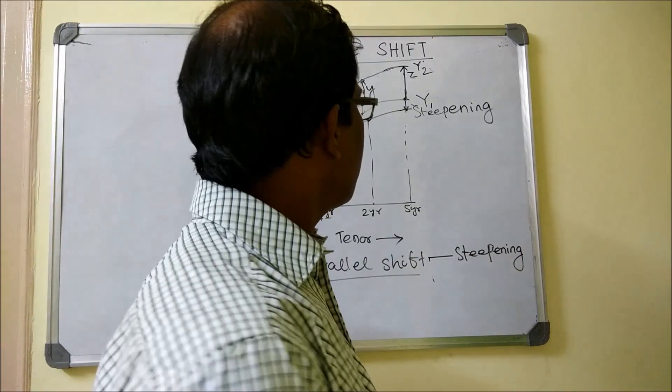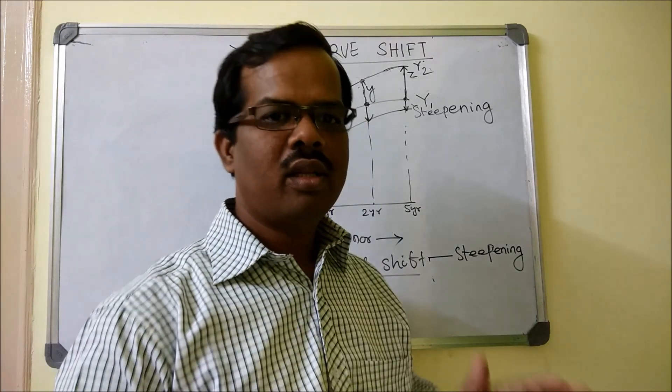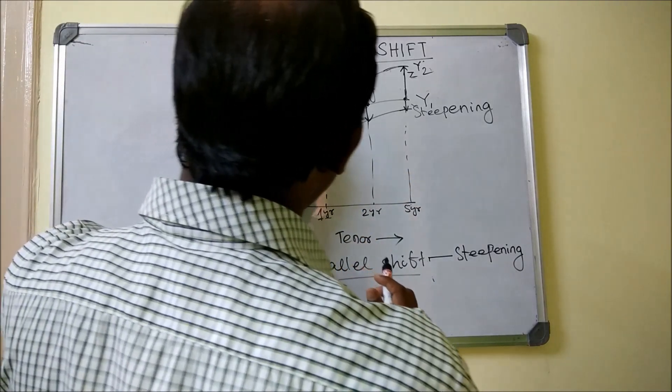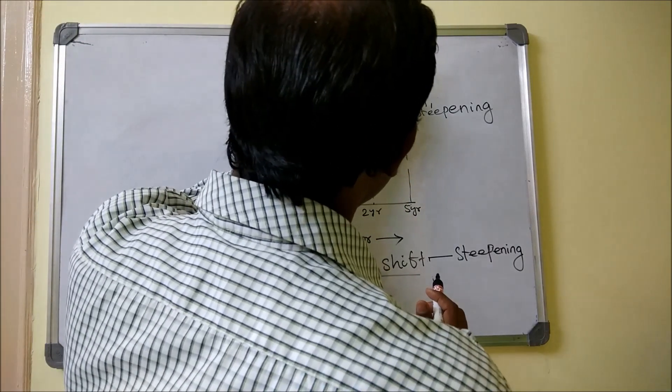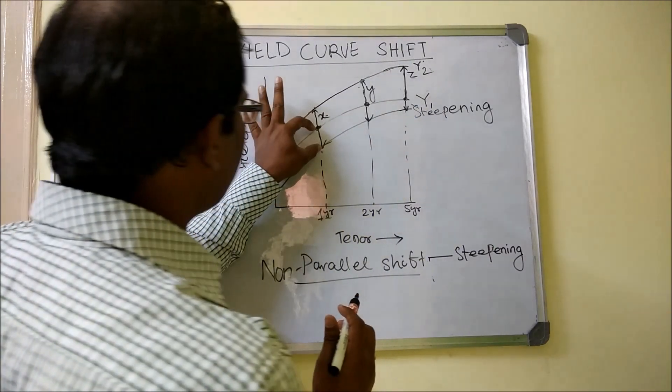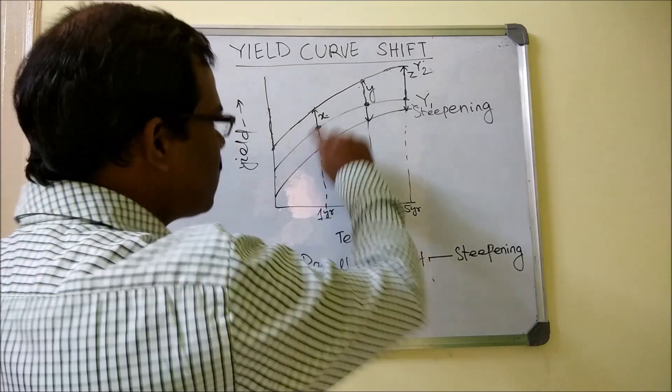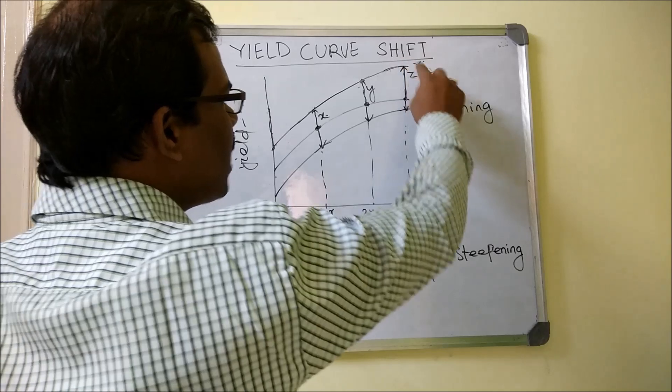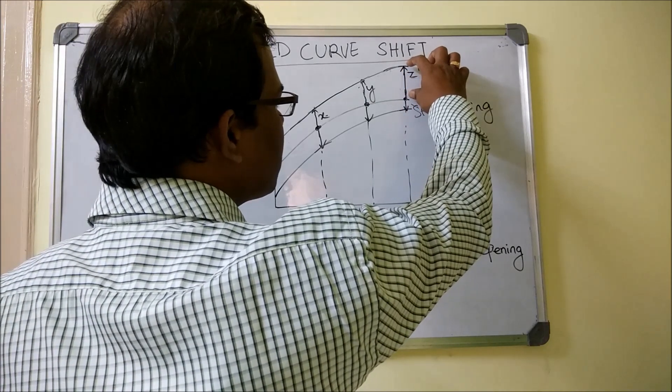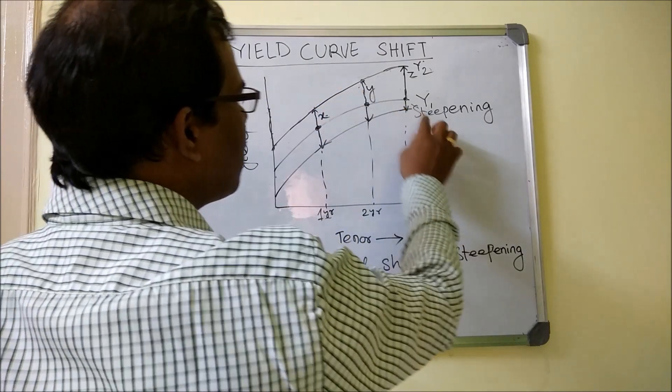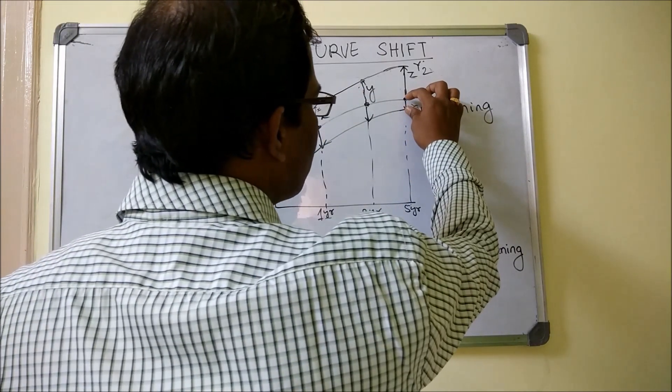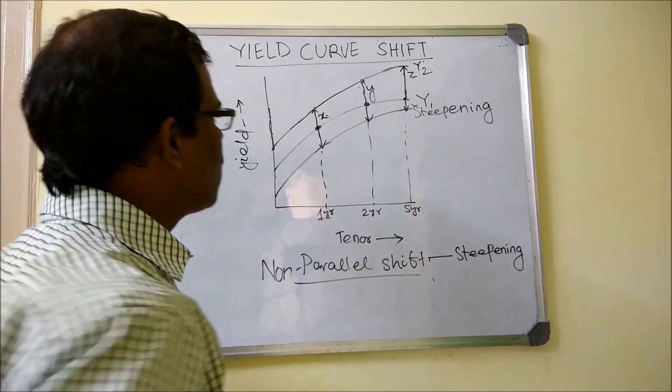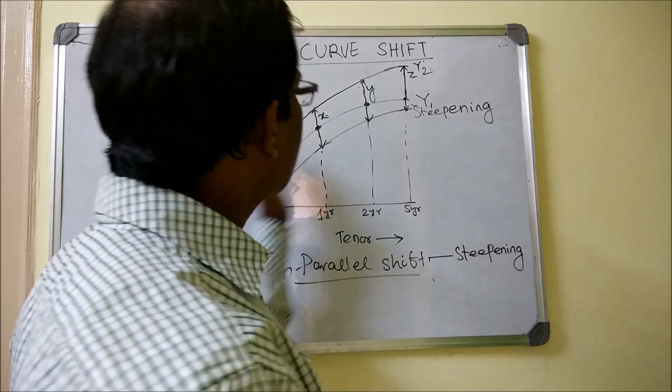There is another case when the interest rate decreases. At that point in time, the long-term interest rate is decreasing at a slower pace than the short-term interest rate. In such a scenario it will also be called steepening. In an increasing scenario, the long-term rate has to increase at a much faster rate than the short-term rate, but in a decreasing scenario the long-term rates has to reduce at a much slower rate than the short-term interest rate. This is called the steepening of the curve.